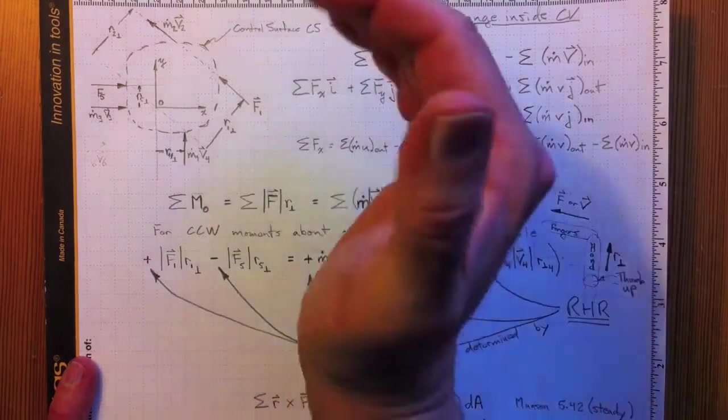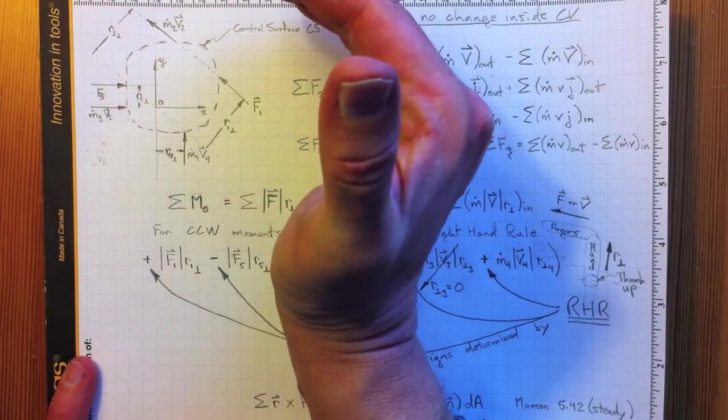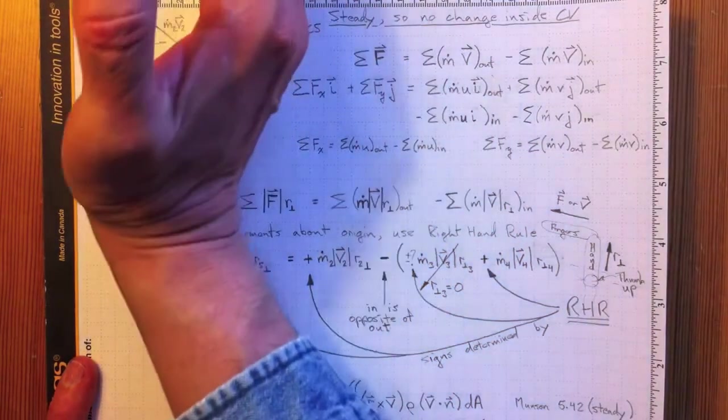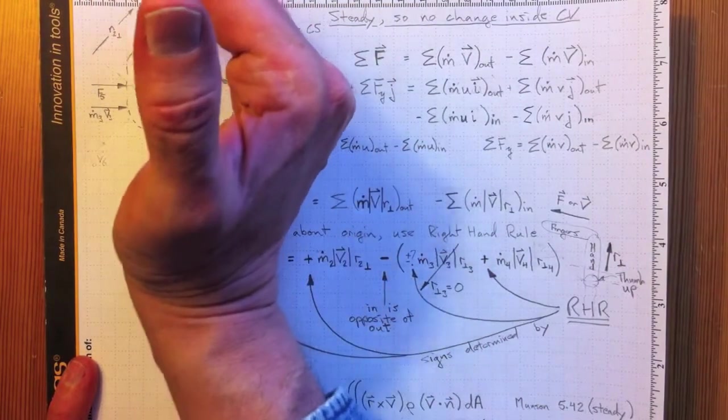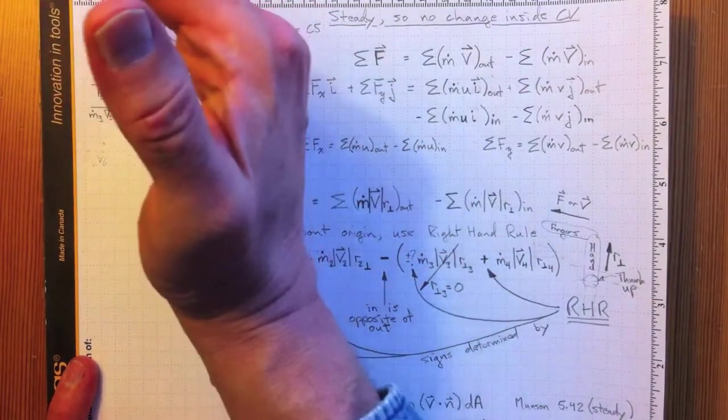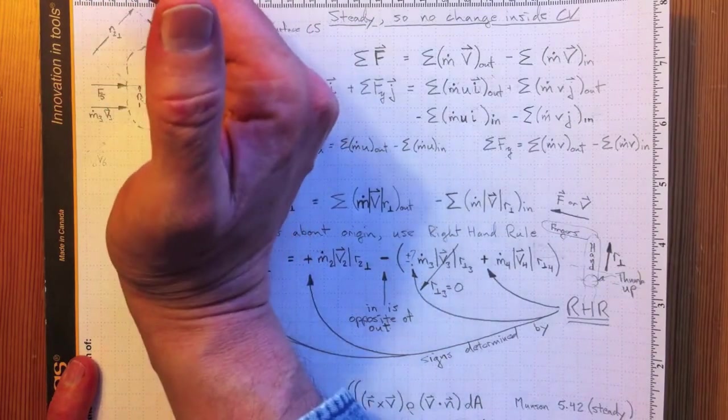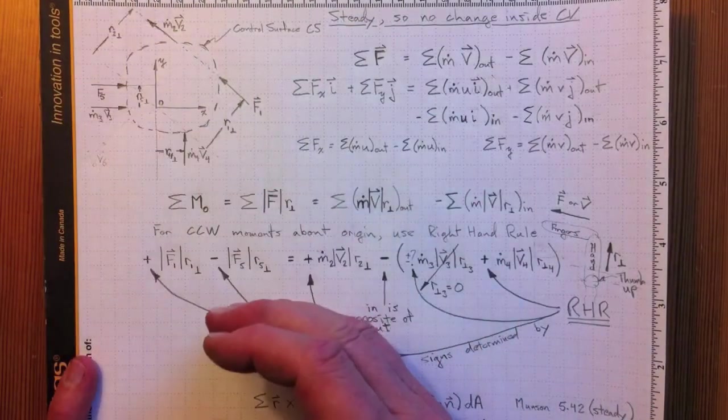If we apply the right-hand rule, which says if I take my right hand like this, thumb up, align my hand with the radius vector and my fingers with the force vector, if it lines up so that it's going in the same direction as my fingers, then that's positive. That's a counter-clockwise moment.